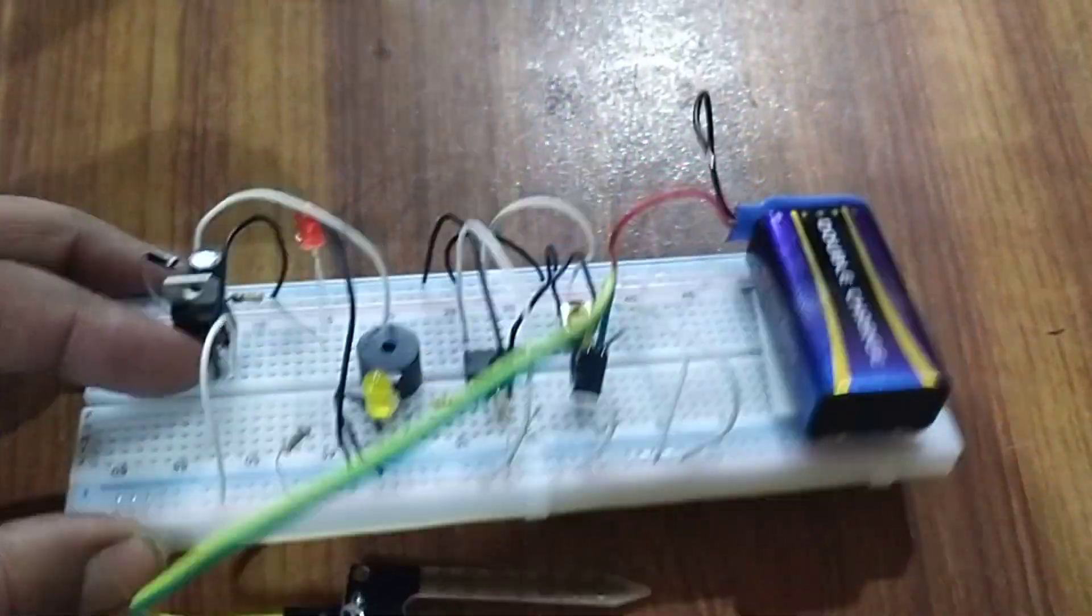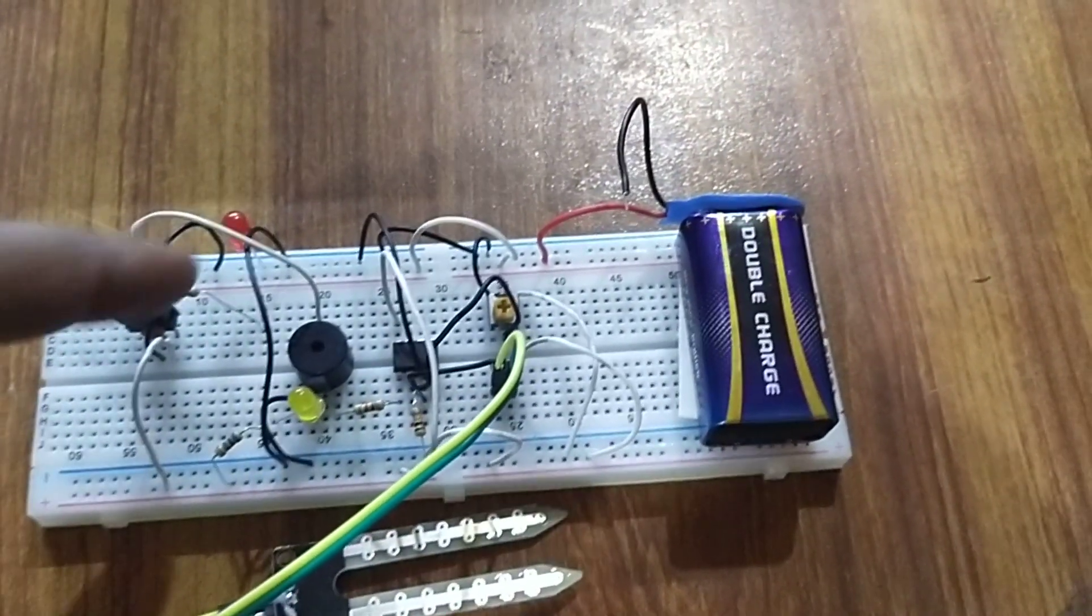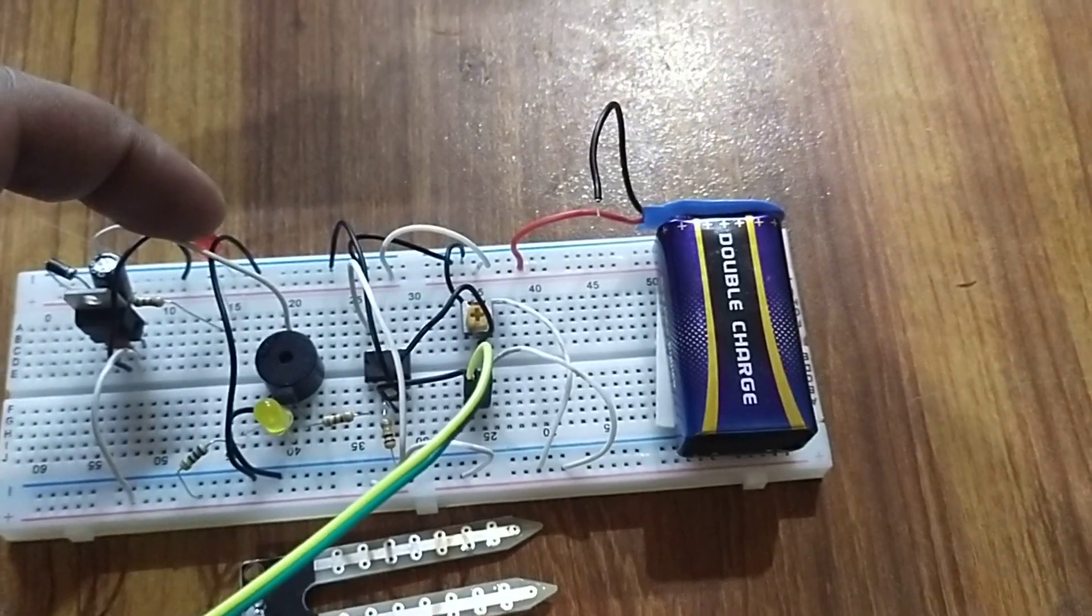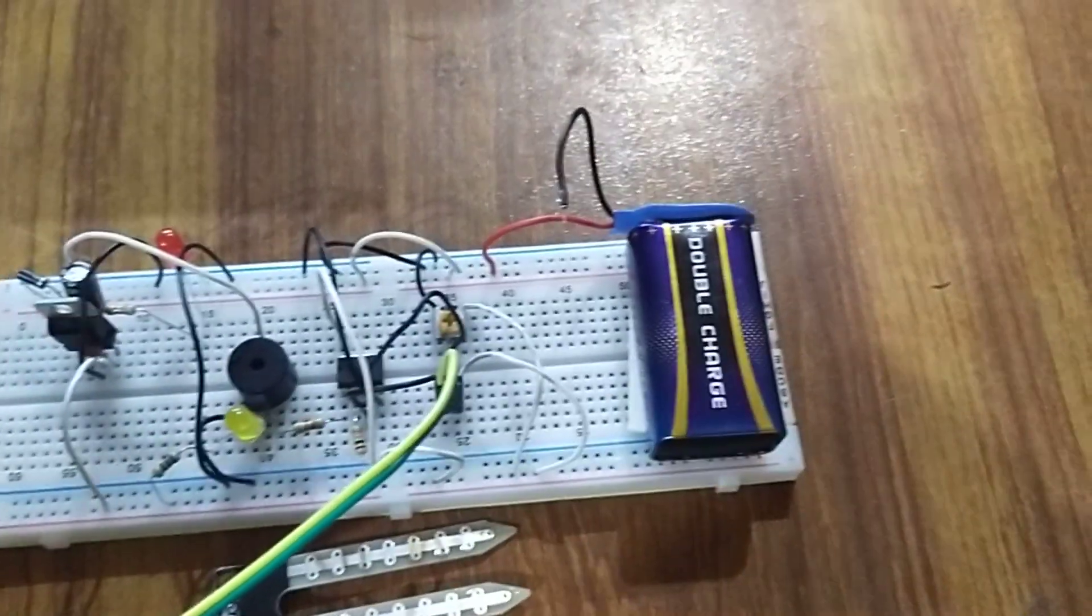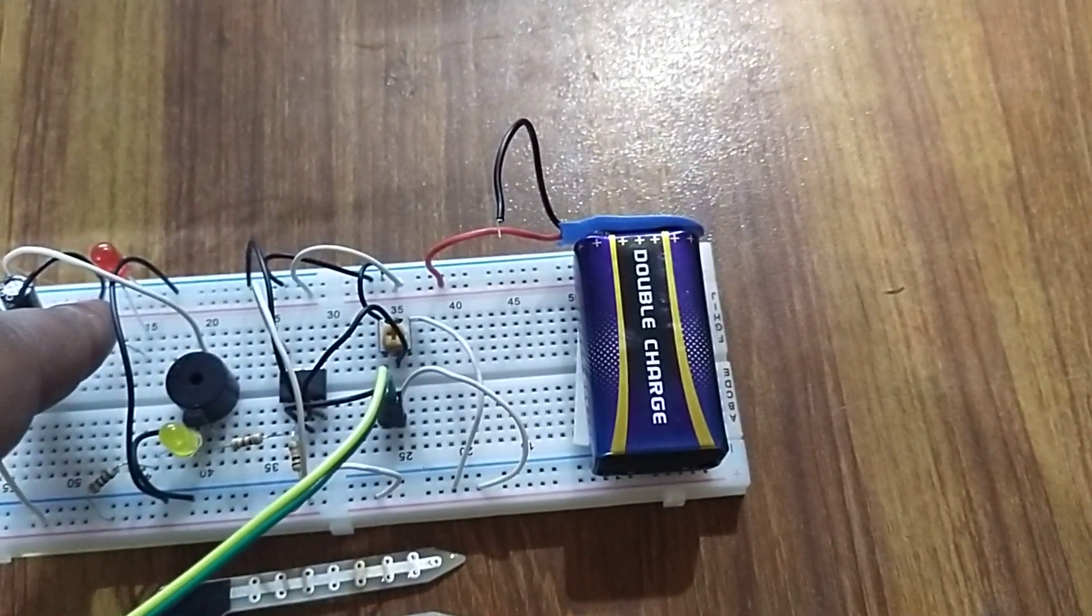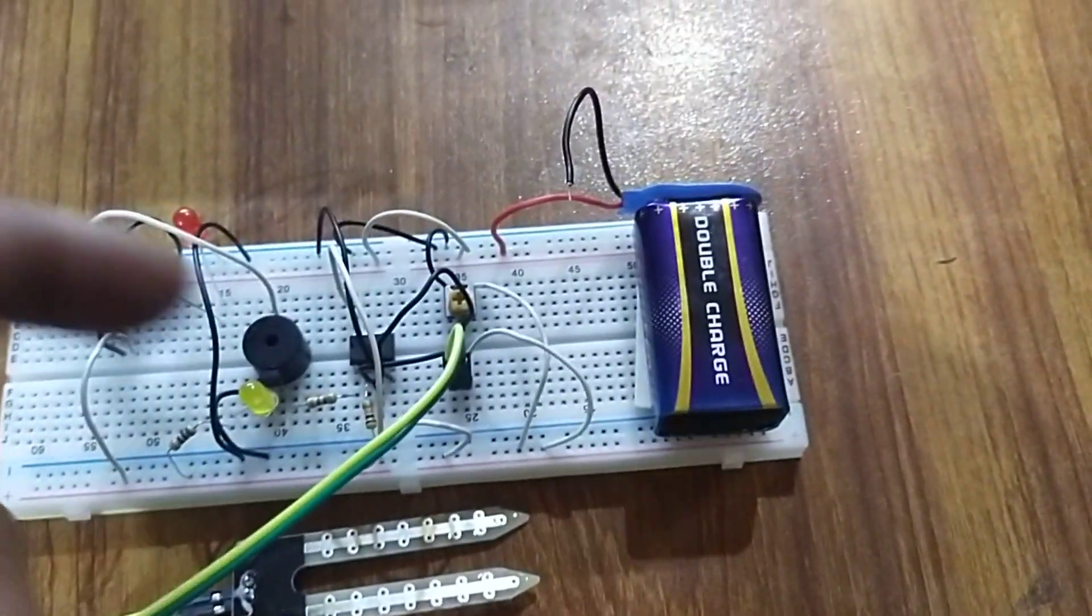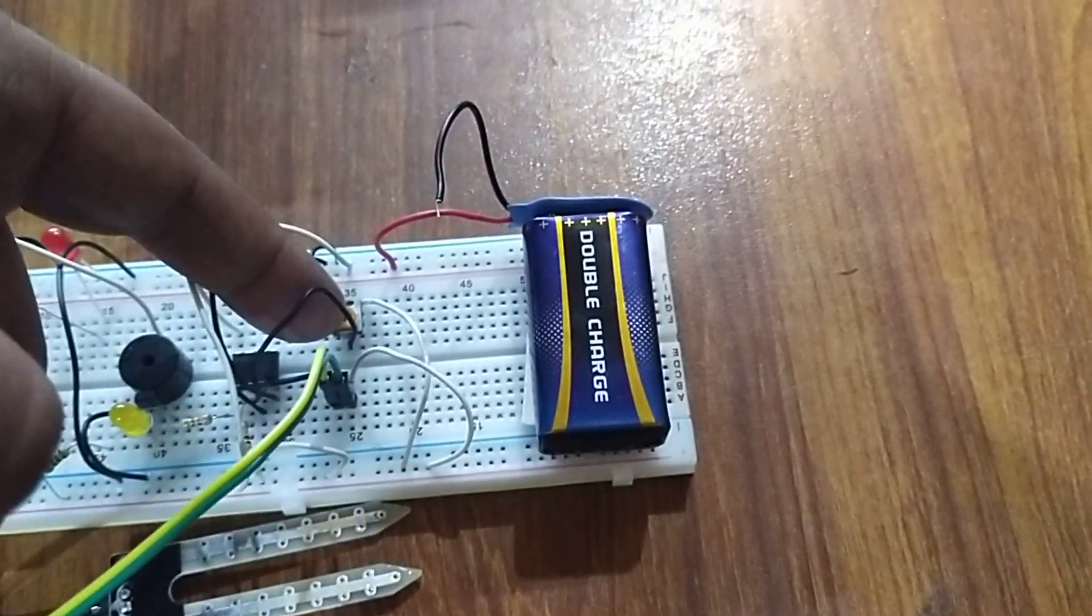We use a 7805 regulator. This is a 4007 diode, a 100 microfarad capacitor, and this is an LED for power supply indication. The regulator converts 9 volts to 5 volts. In this circuit, we use a 1k resistor, a buzzer alarm, and an LM358 op-amp.